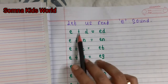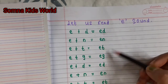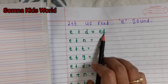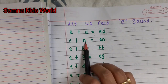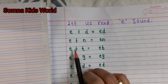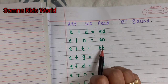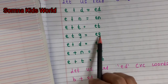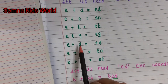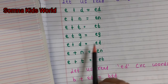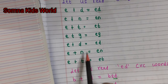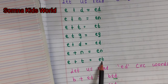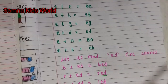So let us start now. What is the phonic sound of 'e'? The phonic sound of 'e' is 'e'. So how to read these two-letter words — let us see: a-d (ed), a-n (en), a-t (et), a-g (eg). Ed, en, et — now let us see how to read the CVC words.